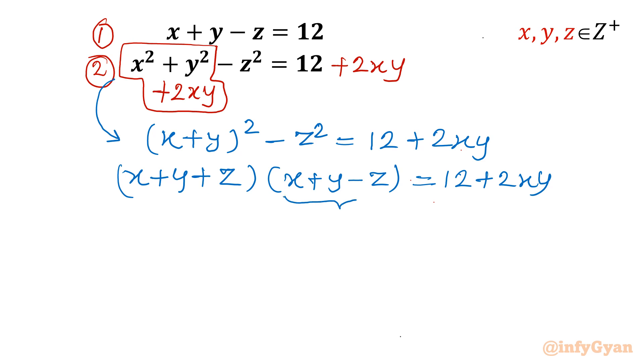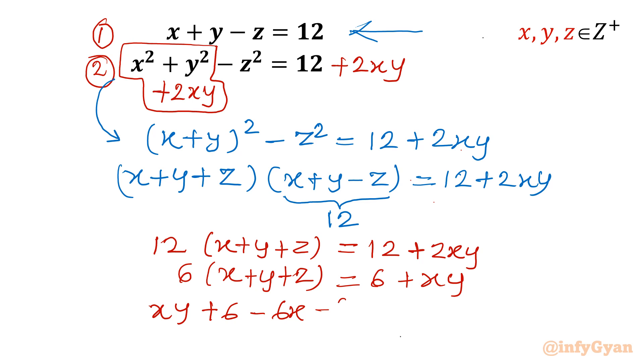Now x plus y minus z as per equation 1 it is 12. So I will be writing here 12. Now we can write our equation as 12 times x plus y plus z equal to 12 plus 2 times xy. Equation is divisible by 2. So I will have 6 times x plus y plus z equal to 6 plus xy. Now take all the terms to RHS. xy plus 6 minus 6x minus 6y minus 6z equal to 0.